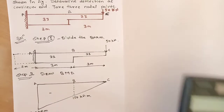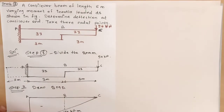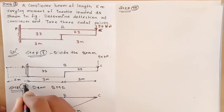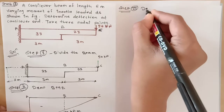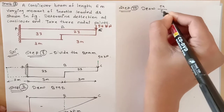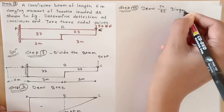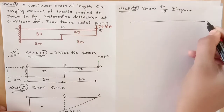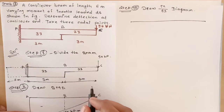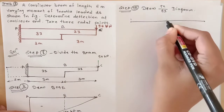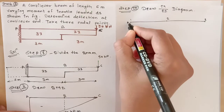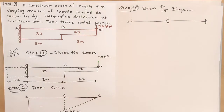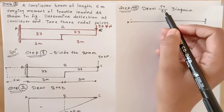Then the next step is step number three: draw the M/EI diagram. The node points are first, second, and third — that is, points A, B, and C. Draw the M/EI diagram, meaning moment divided by EI.